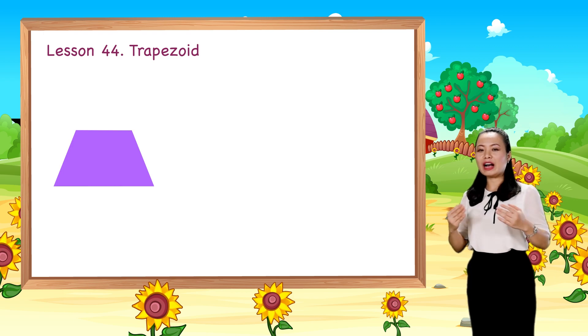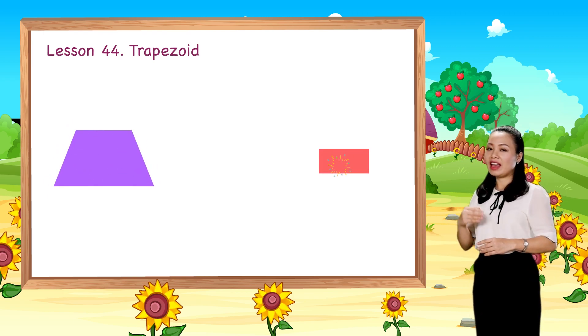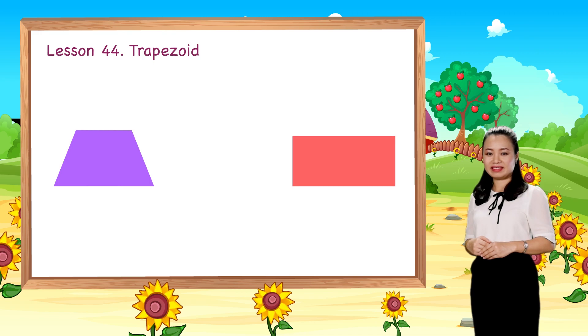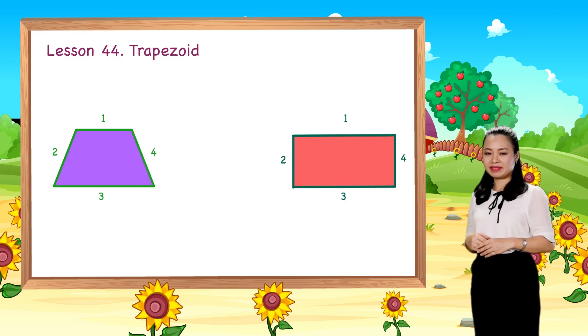How are the trapezoid and rectangle alike? They both have four straight sides and four corners.